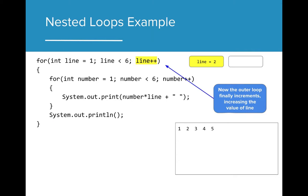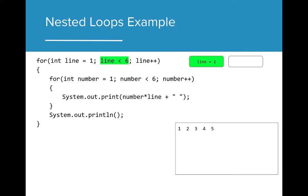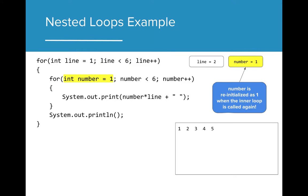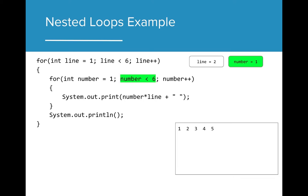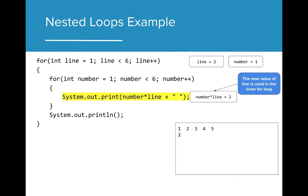Now that the outer for loop has gone through all of the code within the brackets, the increment increases the value of line by 1. Since line is still less than 6, the for loop executes again. Since the first line of code in the outer for loop is another for loop, we reinitialize number and set its value to 1, and the whole process begins again. Number is less than 6, so the for loop executes. Now when we print number times line, the value of line has increased to 2, but number has returned to 1. When printed to the console, the new starting value is 2.